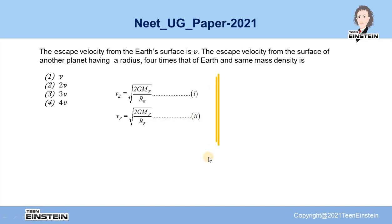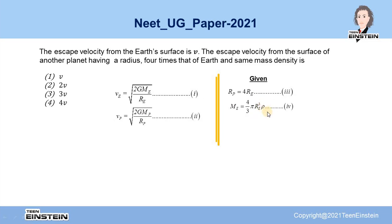Now let us see what information is given in the problem. The radius of the planet is 4 times that of the Earth, and the mass density is equal for both of them. We can write down the mass of the Earth using equation 4, where rho is the mass density, and this mass density is the same for the planet also. So we can write down the mass of the planet as (4/3)πRP³ρ, considering both the Earth and the planet to be solid spheres. If we replace RP with 4RE, we get the mass of the planet MP as 64 times the mass of the Earth.